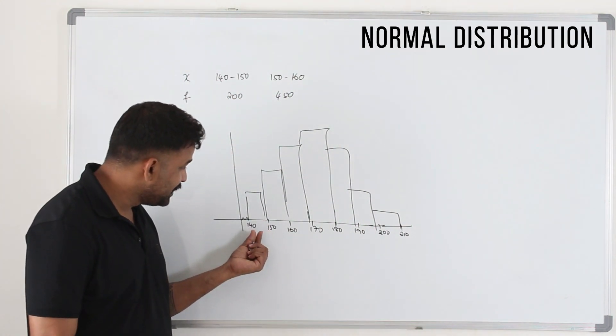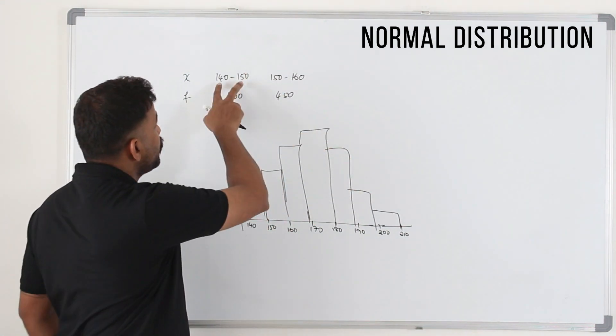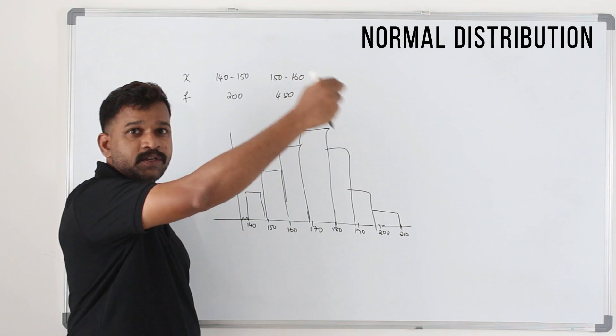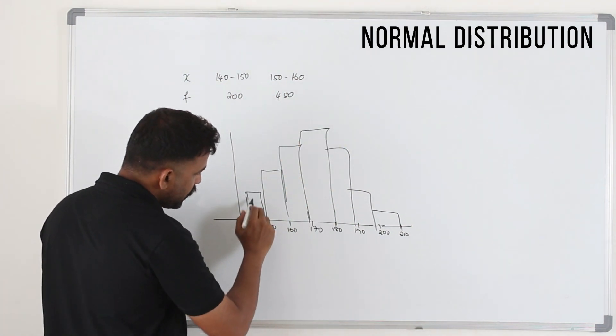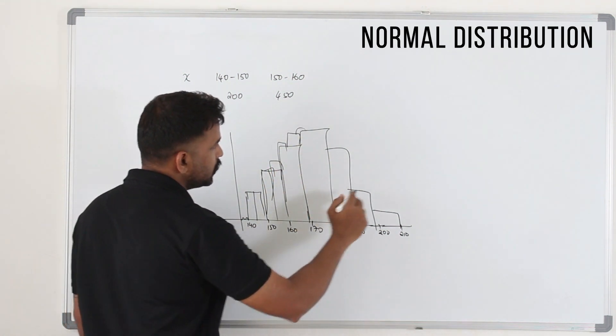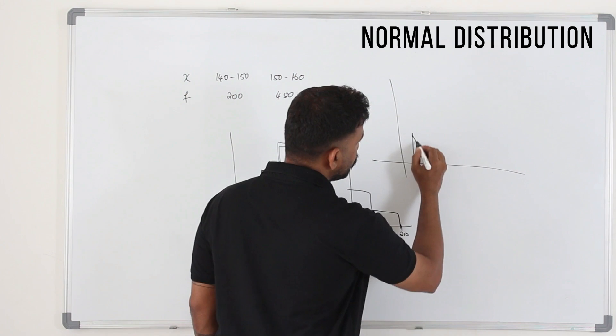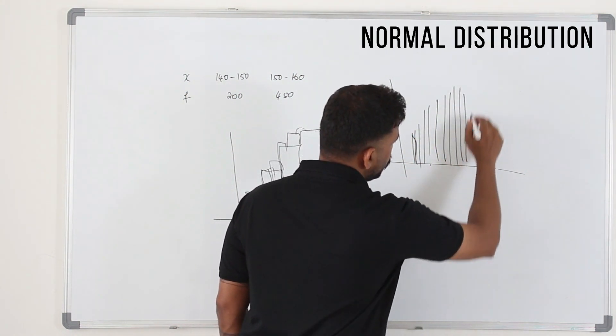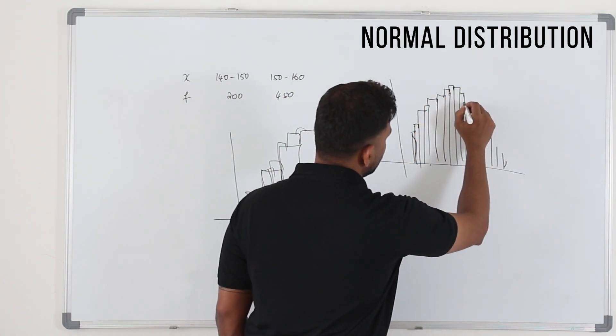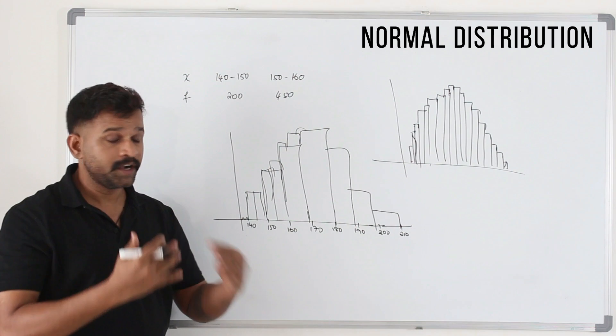Now if you reduce the width, instead of 140 to 150, you frame another table. Now reduce the width to 140 to 145, 145 to 150, 150 to 155. When you reduce the width of the bar, the bars get smoother and smoother. You'll get something like this. If you keep reducing the class width, you'll get a histogram like this, something like this.